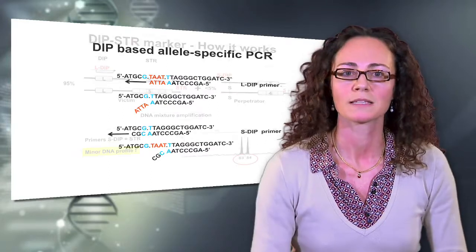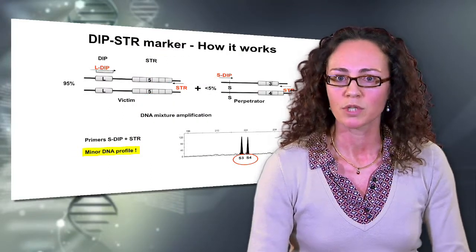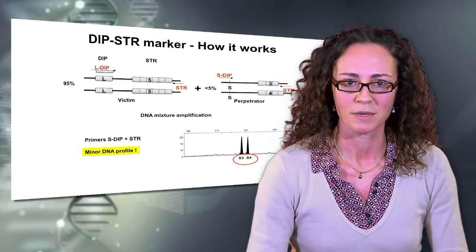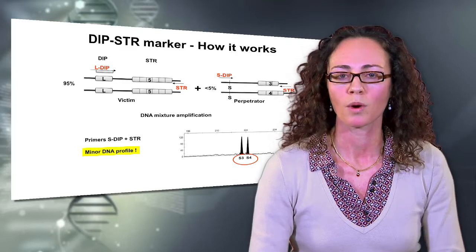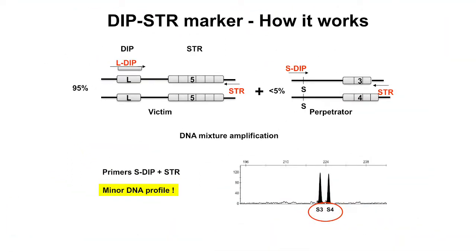Let's see how it works with an example. Here we have a DNA mixture where the major DNA, which could be the DNA of the victim, is genotype L5-L5 for the DIP-STR. This is mixed to a small quantity of DNA of the perpetrator, for example, which might be S3 and S4. If we analyze this mixture by DIP-STR primer using the S allele specific primer, we can target the amplification of the minor DNA, even when this is present in less than 0.1 percent of the mixture.